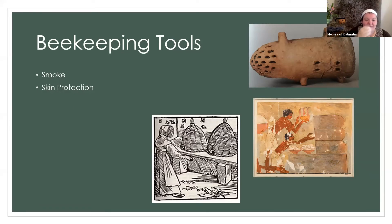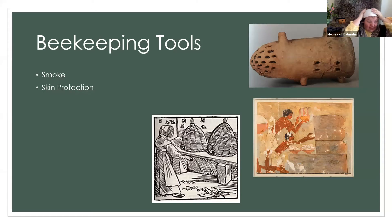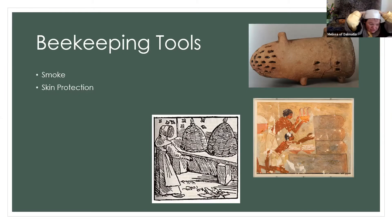Skin protection was something ancient and medieval beekeepers were very concerned about, since bees like to sting. In ancient and medieval times, an ointment of wild mallow mixed with olive oil was suggested to rub on your face, hands, and arms to minimize bee attacks. There are many images in medieval texts showing a headscarf or headband that could in theory be pulled over the face to protect from bees.